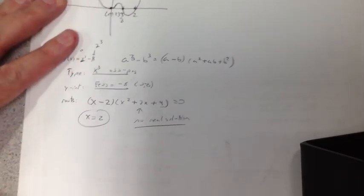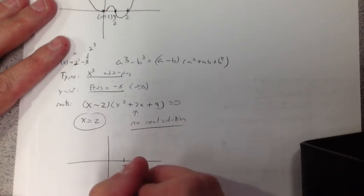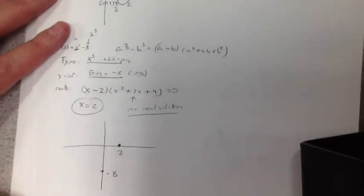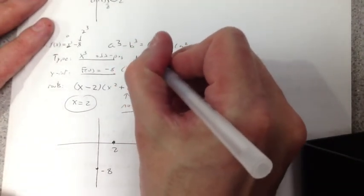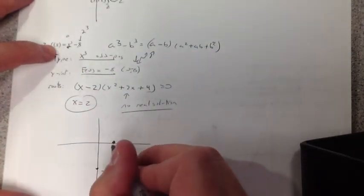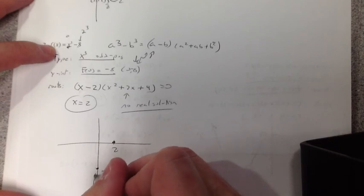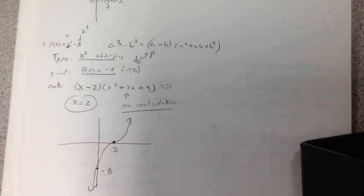And now we just graph it. x = 2. My only root, negative 8. So when I graph it, it's odd, negative, odd, positive. Starts negative, ends up. Remember, it looks like a cubic graph. Oh, it is a cubic graph. Silly me. All right, anyway, so if you want to go through the 8, through the 2 like a cubic, it is a cubic. And that's what our graph looks like. Ta-da!